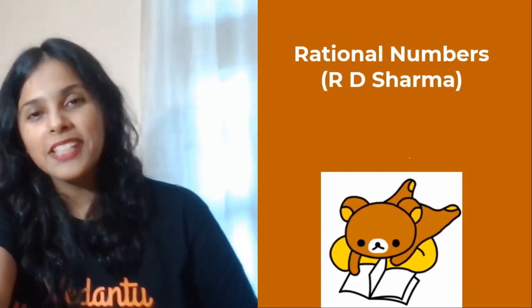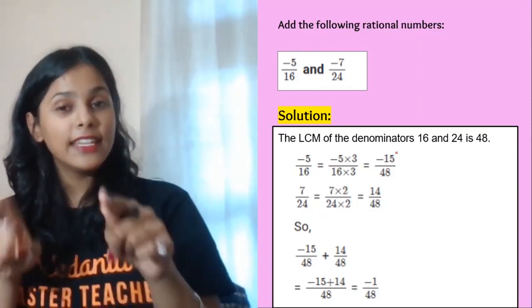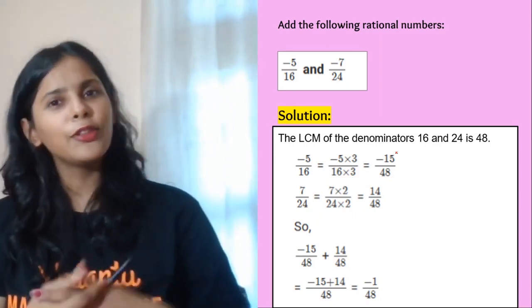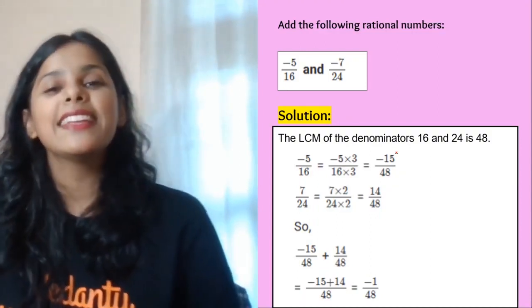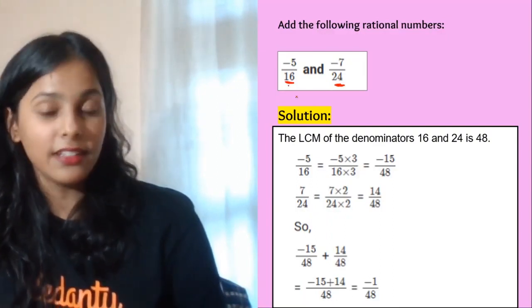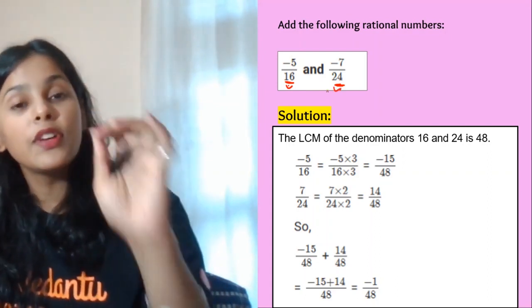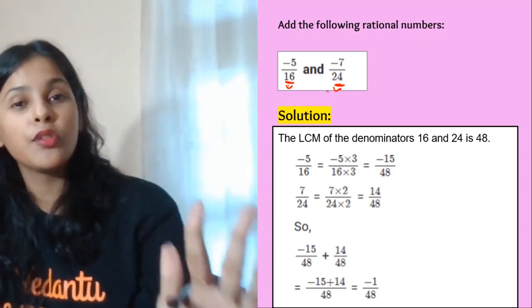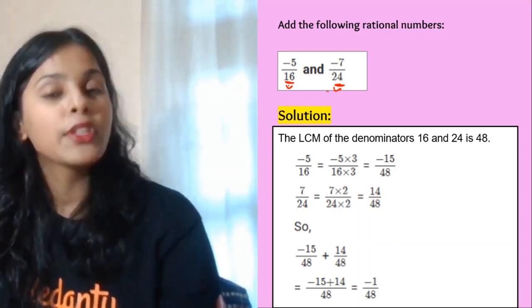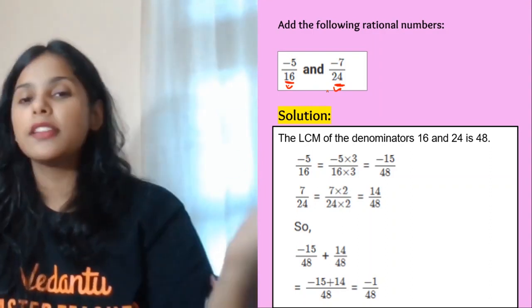The first question is in front of you — you have to add these two rational numbers. Here you have to add two rational numbers whose denominators are different. We have 16 as a denominator and 24 as a denominator. First and foremost, you have to make sure the denominators are equal. You can take the LCM, do cross multiplication, or multiply the same number in both numerator and denominator.